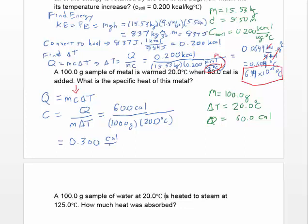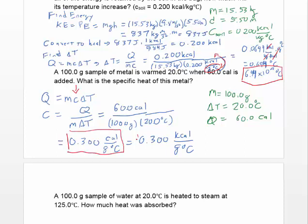The units are calories per gram degree Celsius. The textbook gives specific heat in kilocalories per kilogram degree Celsius — but the numerical value is exactly the same, because converting calories to kilocalories and grams to kilograms cancels out. So the answer is 0.300 calories per gram degree Celsius, which is also 0.300 kilocalories per kilogram degree Celsius.